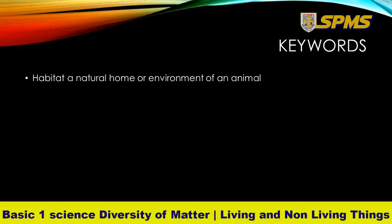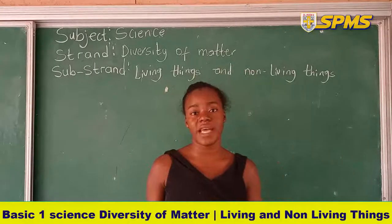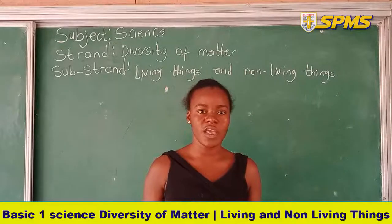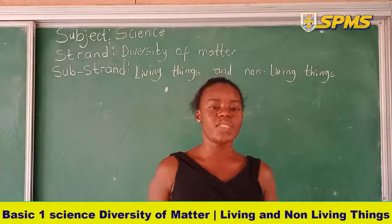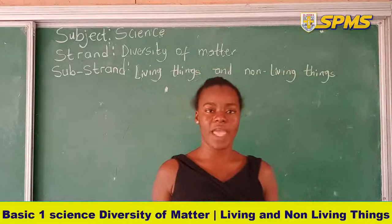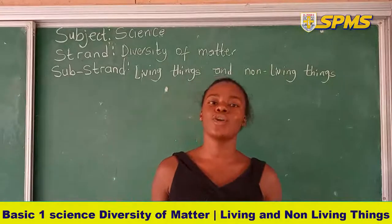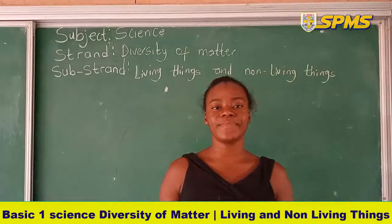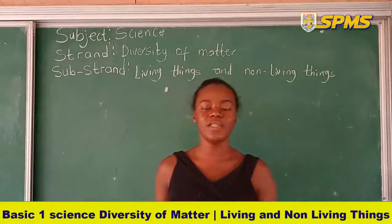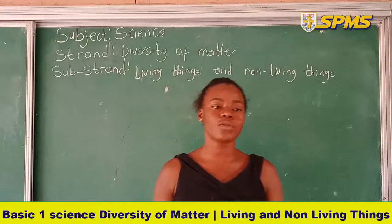In our previous lesson we talked about living things and their characteristics. We said living things have features by which we can describe them. Living things need water to survive; they have basic needs — water, air, and food. Non-living things do not need anything to survive. Living things have a life span, they are mortal, while non-living things do not have a life span.